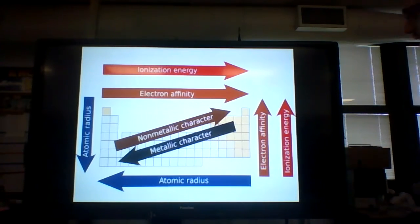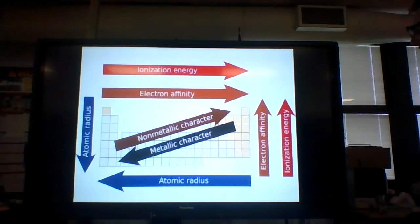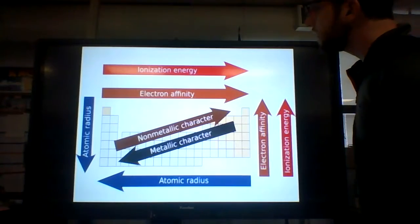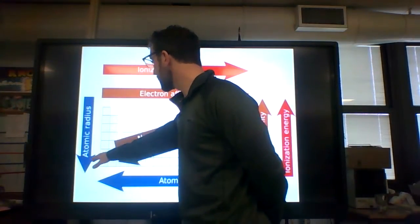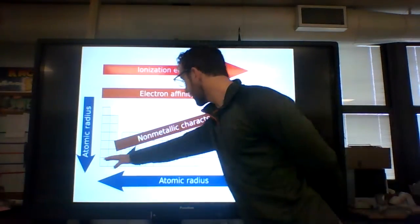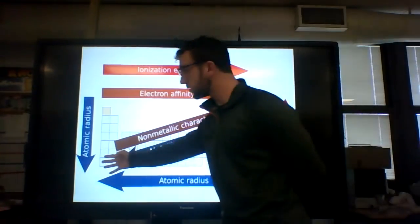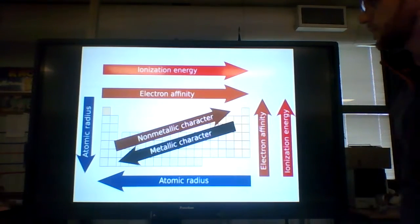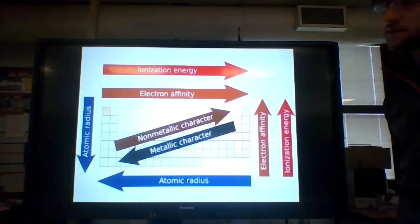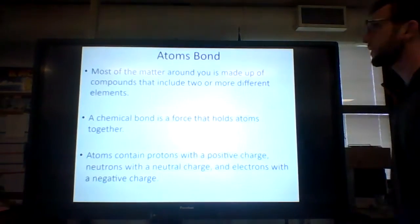We've seen this before — it shows atomic radius increasing as you go down and increasing as you go over. It gets smaller as you go toward the left side and larger toward the right side. So the bottom right is going to have a bigger atomic radius than the top left.